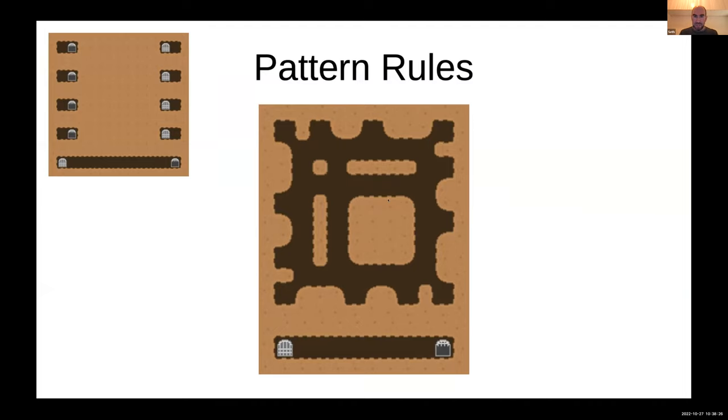For example, if this were the example level that we were given, we can see that the entrance tile to the right of it is always a blank tile. There's only one, but that's always the case. We could extract from that a constraint that there being an entrance tile implies that the tile to the right of it is a blank tile.